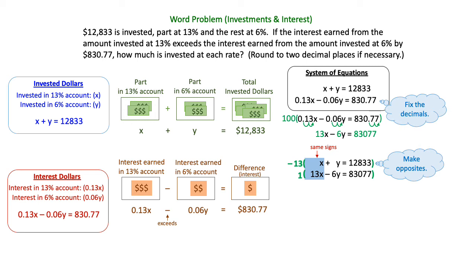I want my X's to be opposites after I multiply these values in. So the first equation, if I multiply by negative 13, I will get negative 13X minus 13Y equals negative 166,829. The second equation, I'm just multiplying by one so it doesn't change. It will be 13X minus 6Y equals 83,077.